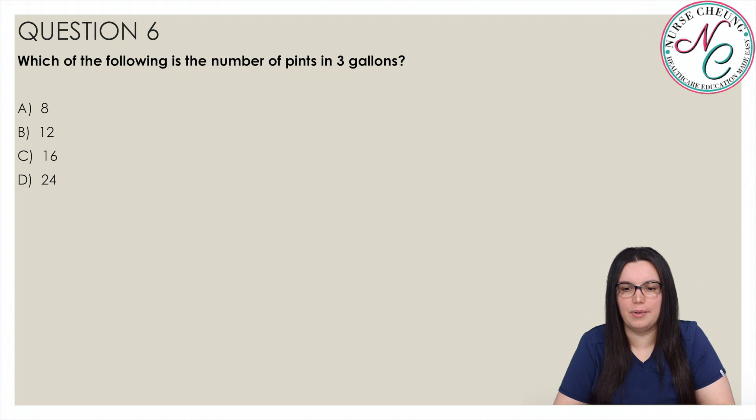Which of the following is the number of pints in 3 gallons? Is it A, 8, B, 12, C, 16, or D, 24? And the correct answer is D, 24. A gallon consists of 4 quarts, and there are 2 pints in each quart. Since 4 times 2 is equal to 8, there are 8 pints in each gallon. We multiply 3 gallons by 8 pints, 3 times 8 is equal to 24, therefore there are 24 pints in 3 gallons.